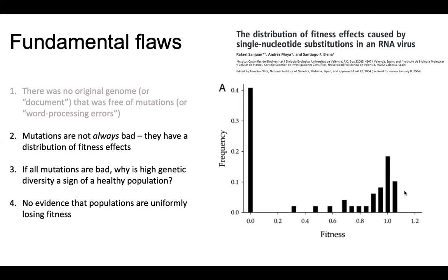This study looked at the distribution of fitness effects caused by single nucleotide substitutions in an RNA virus. They randomly picked locations across the genome, mutated them, and measured how each change impacted fitness. On the x-axis is fitness with one being neutral, less than one deleterious, greater than one beneficial. As you can see, there are clearly mutations that increased the fitness of the virus — it replicated faster. There were also mutations that harmed the virus, but there were still mutations that increased fitness. Therefore, mutations are not always bad.